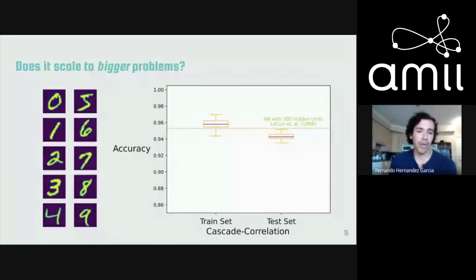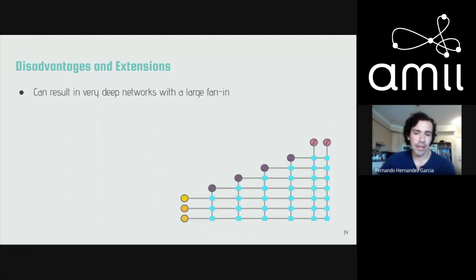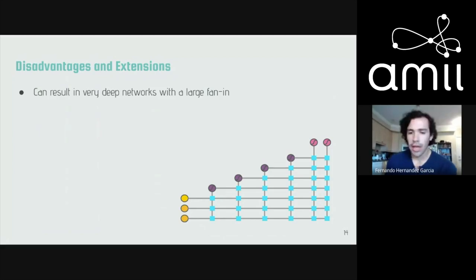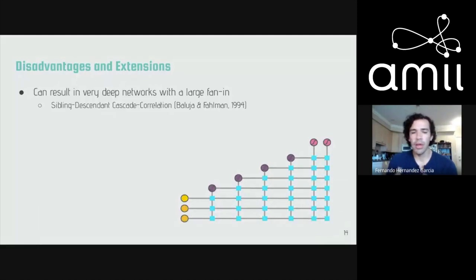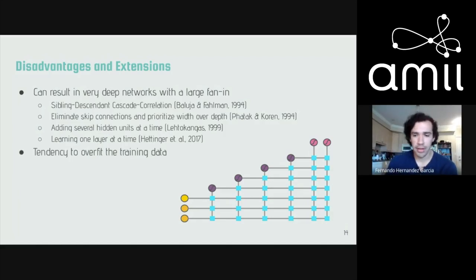I then referred to the literature to see if somebody had found other problems with cascade correlation. Many people found disadvantages, but many also proposed extensions to address them. The main disadvantage is that this can result in a very deep network with a very large fanning — the fan pattern that emerges as hidden units are added. My cascade correlation networks ended up with about 100–200 hidden units. To address this, people proposed making the network wider instead of deeper.